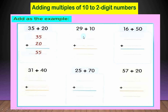نخش على الاسئلة: 29 plus 10. ادي الـ 29 وادي الـ 10. we begin with the ones بابتدي بالـ ones على ايدي اليمين. 9 plus 0 equal 9. برافو! 2 plus 1 equal 3. the result is 39.